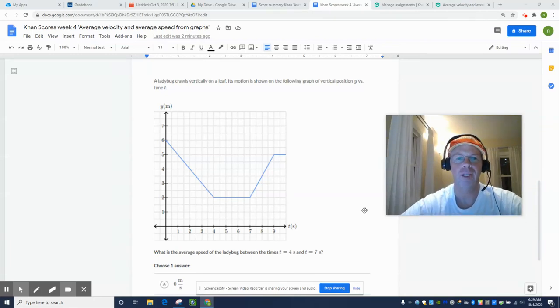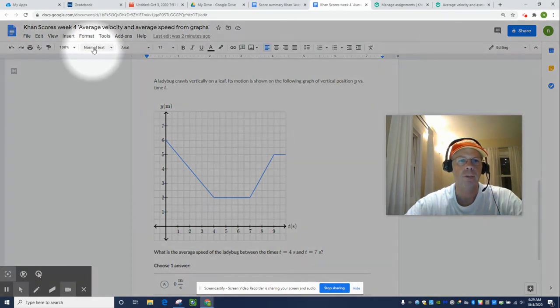Hello, Physics Nation. My name is Nate Larmond, and I'd like to do a Khan Academy problem from a set called average velocity and average speed from graphs.